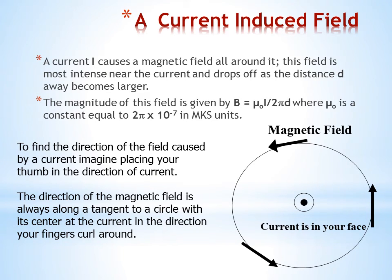A current I causes a magnetic field all around it. This field is most intense near the current and drops off as the distance d away becomes larger. The magnitude of this field is given by B equals mu zero I divided by 2 pi d, where mu zero is the constant equal to 2 pi times 10 to the minus 7 in MKS units.